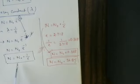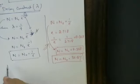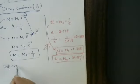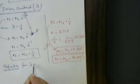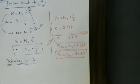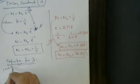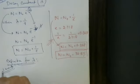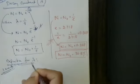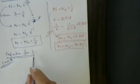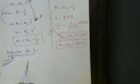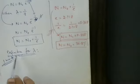Now using either form, we can state the definition of lambda. The definition carries one mark for board examination. Define the decay constant — note that under radioactivity, lambda is called the decay constant or disintegration constant. Define lambda, define decay constant.